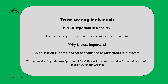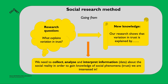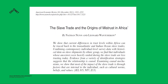What are social research methods? You have a research question — for example, 'What explains variation in trust?' — and you want to go from that question to new knowledge. Our research shows that variation in trust is explained by these factors. But to go from the research question to new knowledge, we have to collect, analyze, and interpret information — data — about social reality, in order to gain knowledge of the social phenomenon we are interested in.